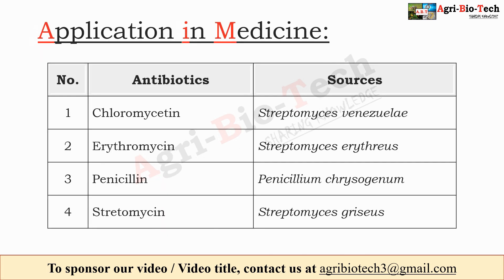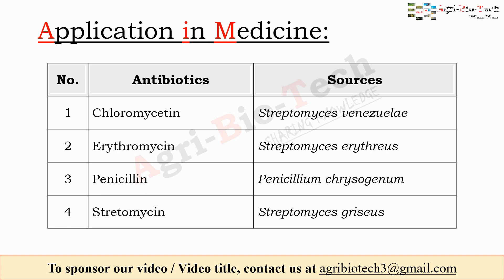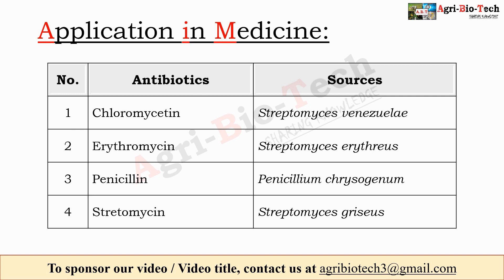Now, the application of microbiology in medicine. Microbes have a very wide range of applications in medicines and pharmaceutical industries. Penicillin and various other antibiotics are used to control infectious diseases. Some common antibiotics and their sources are: Chloromycetin, obtained from Streptomyces venezuelae; Erythromycin, obtained from Streptomyces erythreus; Penicillin from Penicillium; and Streptomycin from Streptomyces griseus.